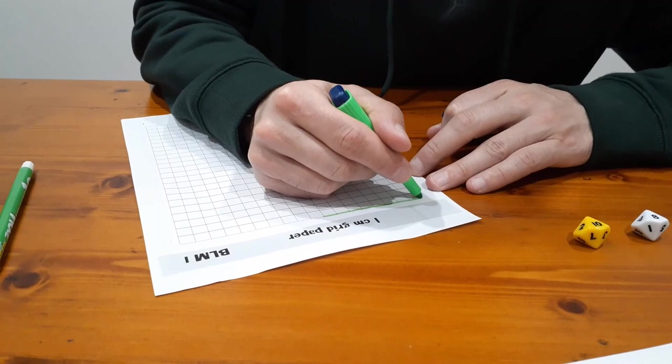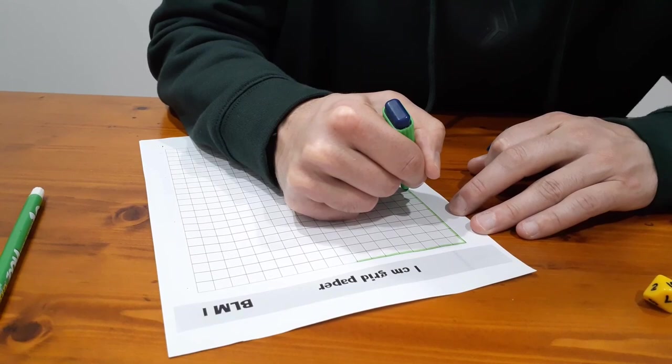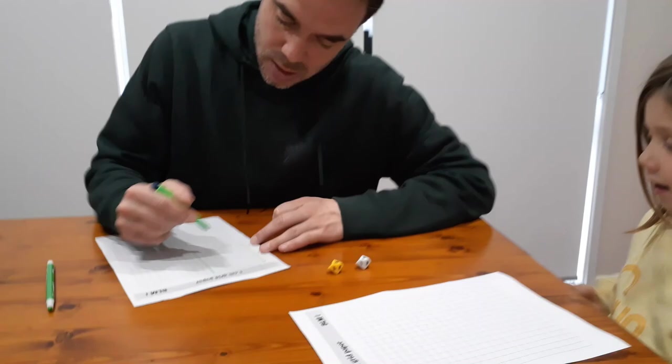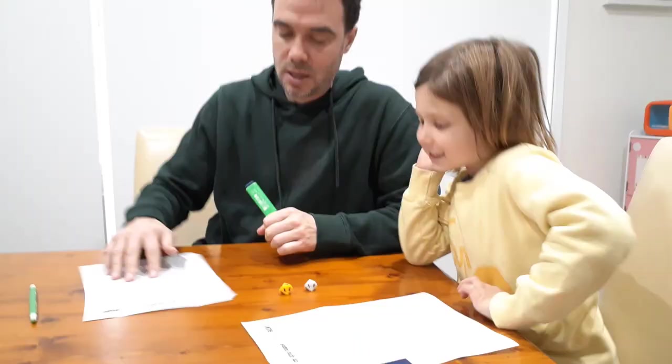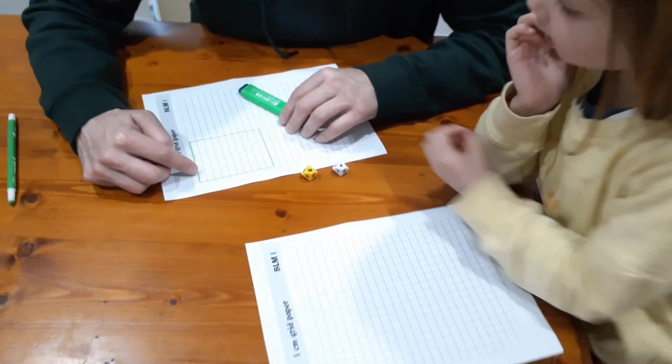Eight groups of ten: one, two, three, four, five, six, seven, eight rows of ten. That's 80.